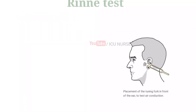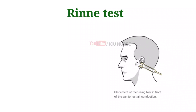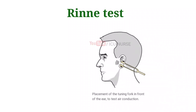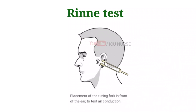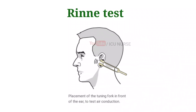The Rinne test is used primarily to evaluate loss of hearing in one ear. It compares perception of sounds transmitted by air conduction to those transmitted by bone conduction through the mastoid. Thus one can quickly screen for the presence of conductive hearing loss.